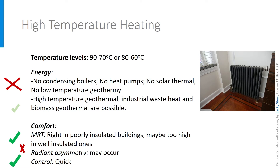The problem with high temperature heating is that it cannot be achieved when using renewable energy. To achieve a supply temperature of 90, there is almost only one solution, and that is to use a boiler using fossil fuel, or at best biomass or biogas. With such a high temperature, the boiler cannot work in condensing mode, and heat pumps, solar systems, and low temperature geothermal energy are excluded. So that is not really future proof, unless a high temperature geothermal plant is available, or industrial waste heat that could produce heat at 90 or 80 degrees. Burning biomass is possible too, however there are doubts about the sustainability of biomass at large scale.